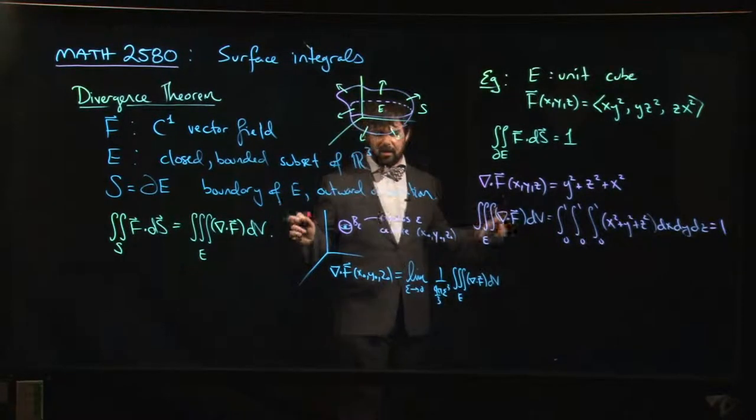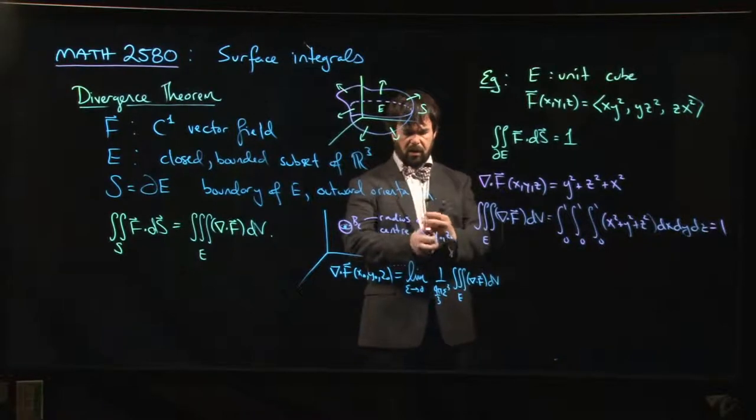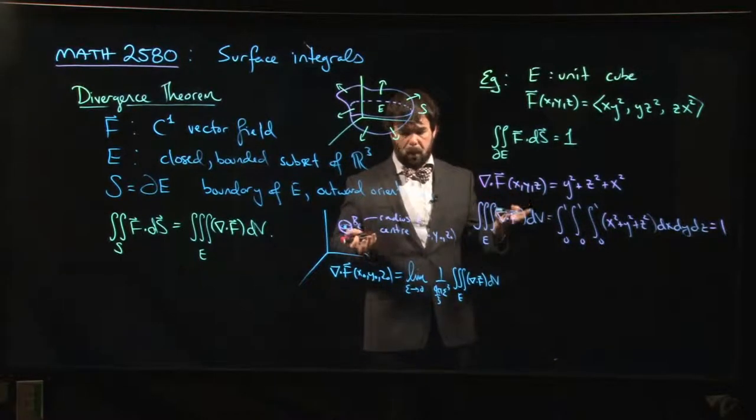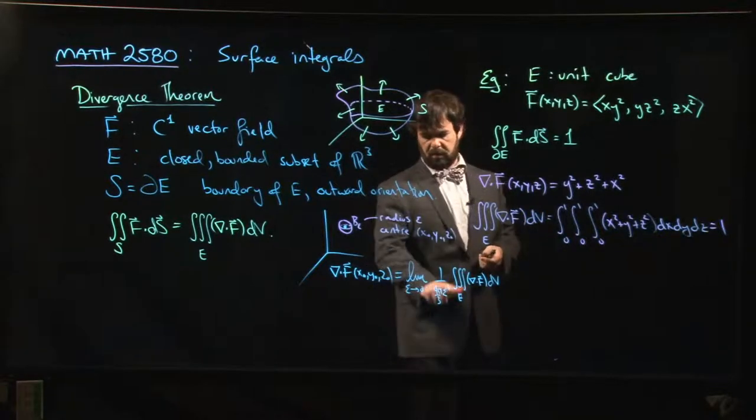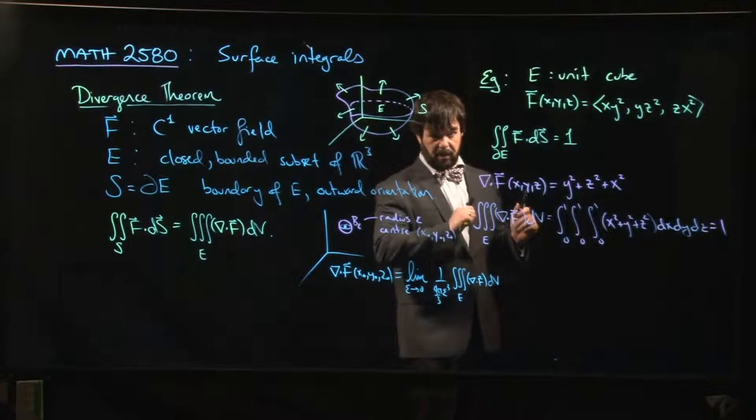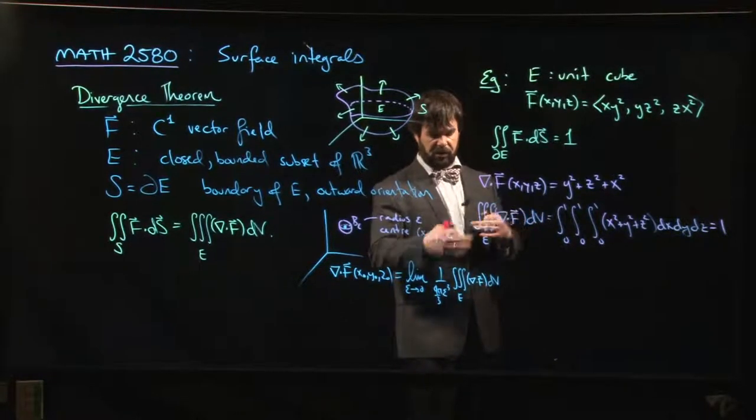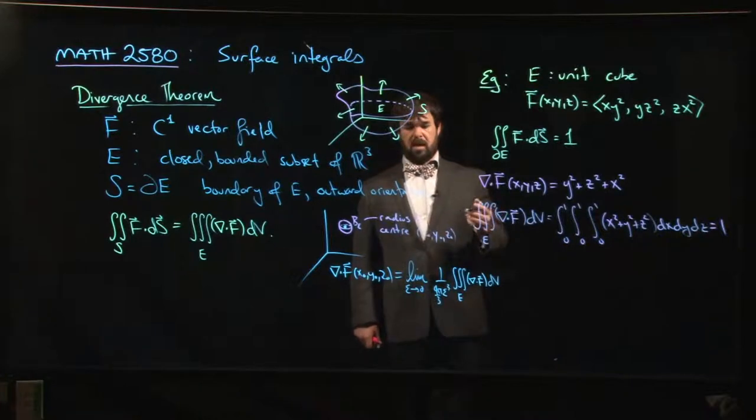And here, this is just this idea that as you shrink your region down to zero, you're sort of integrating over a point, right? But you want to correct for the volume. I think you want to divide by the volume. You know, this is kind of an averaging kind of mean value theorem type argument here, right?